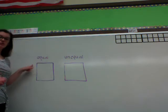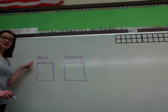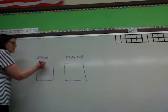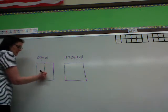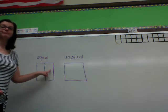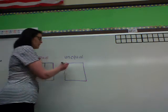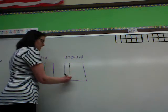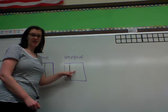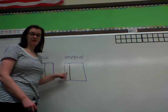Here we have a square and a square, and above, this one says equal and this one says unequal. If I draw a line straight down the middle like that, is this side equal to that side? Yes, it is. But if I go over here to the unequal and draw a line down like that, is this side equal to that side? No, because this side is much bigger than this side of the square.